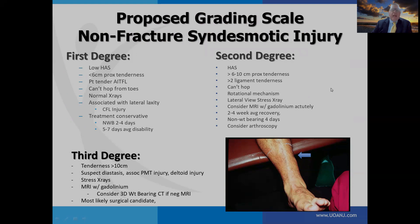I propose a grading scale based off tenderness length. First degree is the low high ankle sprain. Second degree is 6 to 10 centimeters of proximal tenderness, indicating at least two ligaments injured. These athletes can't hop and the sprains are generally rotational in nature. I recommend doing stress x-rays and considering an MRI with gadolinium acutely. Conservative treatment for these may be two to four to six weeks, but there is a high incidence of re-injury and chronic problems.